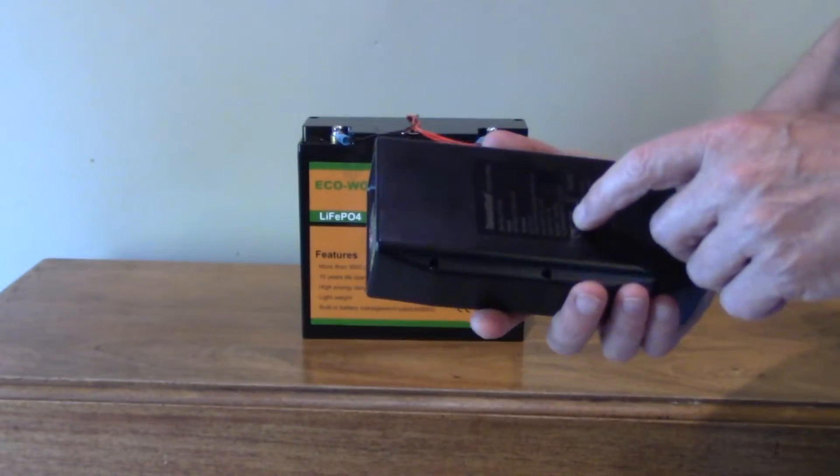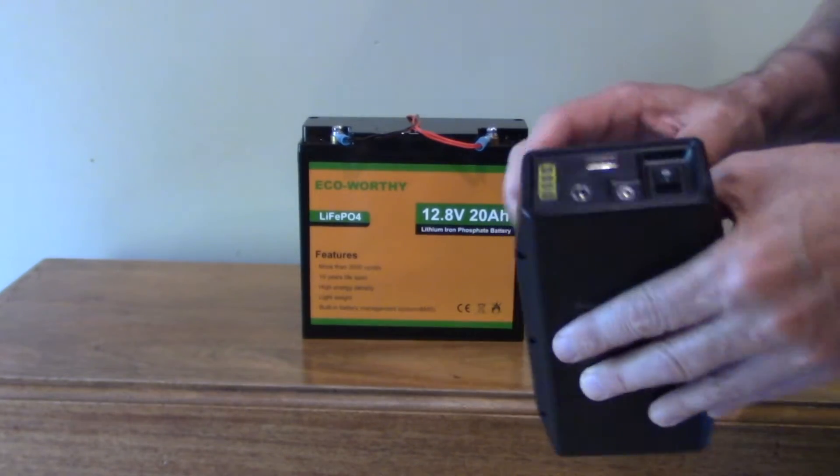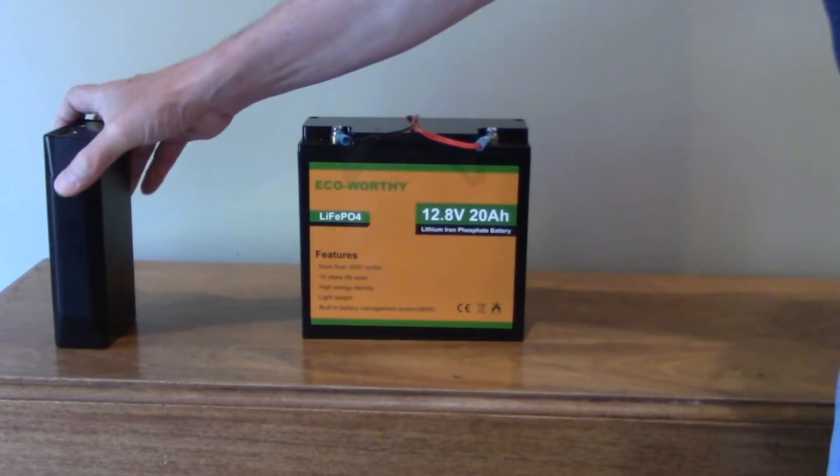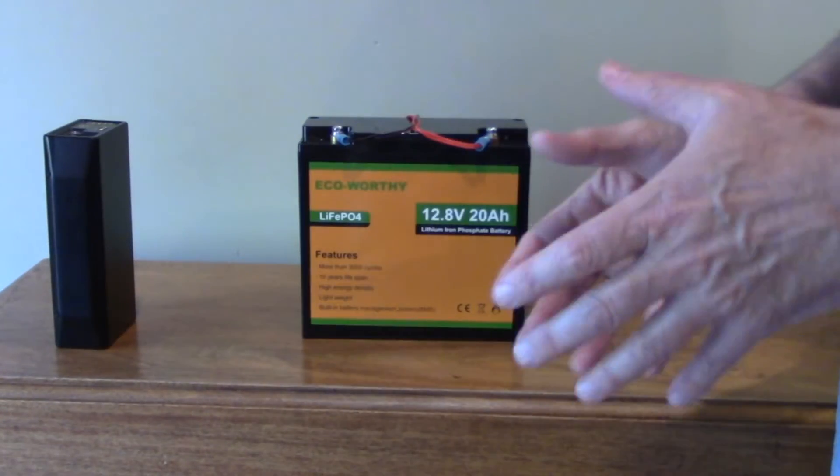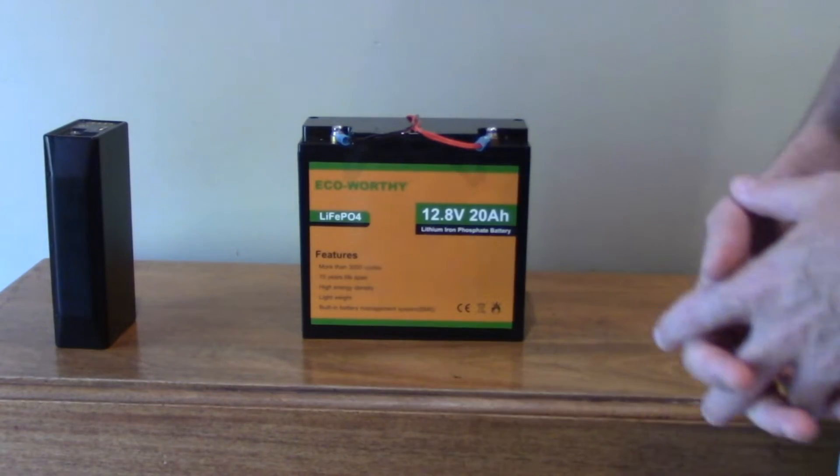This one's rated at 6 amp-hours and it has a 5 amp current capacity. So that's just barely enough to run the Skywatcher. You really need two or three of them if you're going to do any kind of long-term energy to put them in parallel. But that can get kind of expensive after a while.